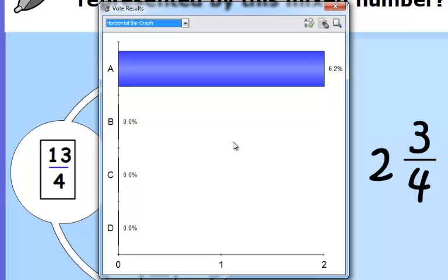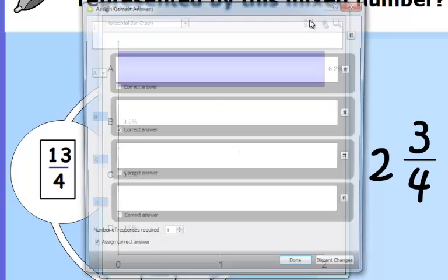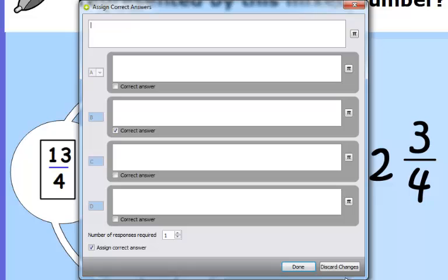Once it has been stopped, the vote results dialog box is going to appear. If a correct answer choice was selected, which in this case it was, the answer choice was B.